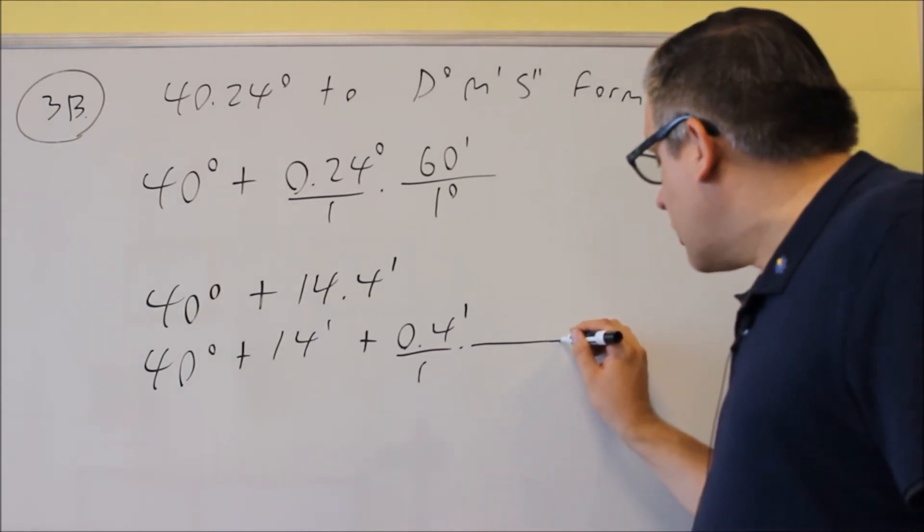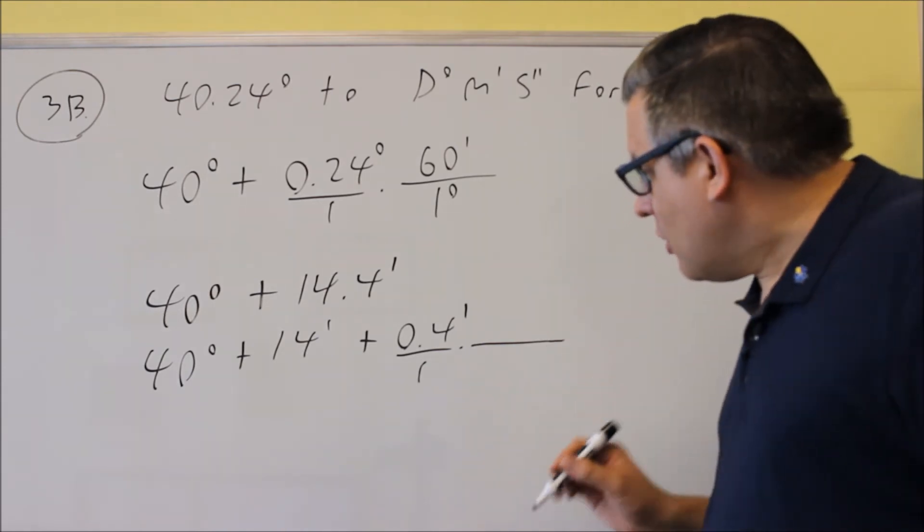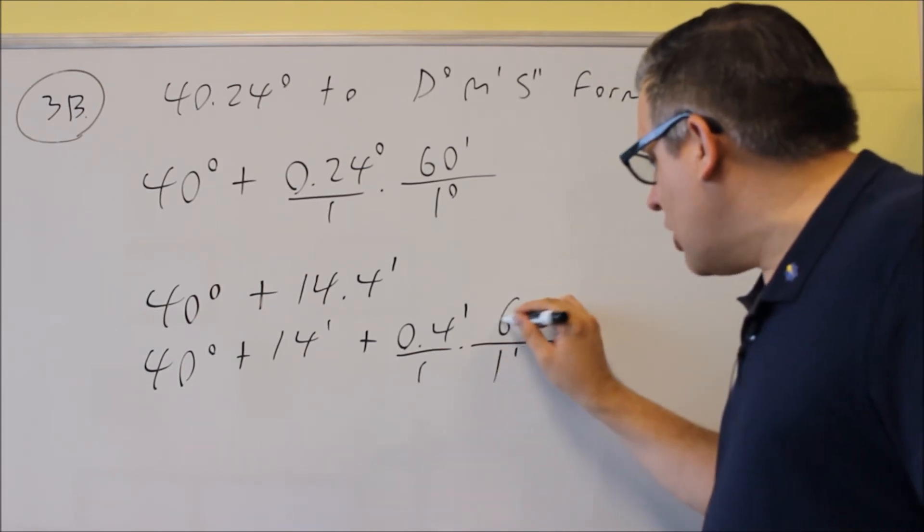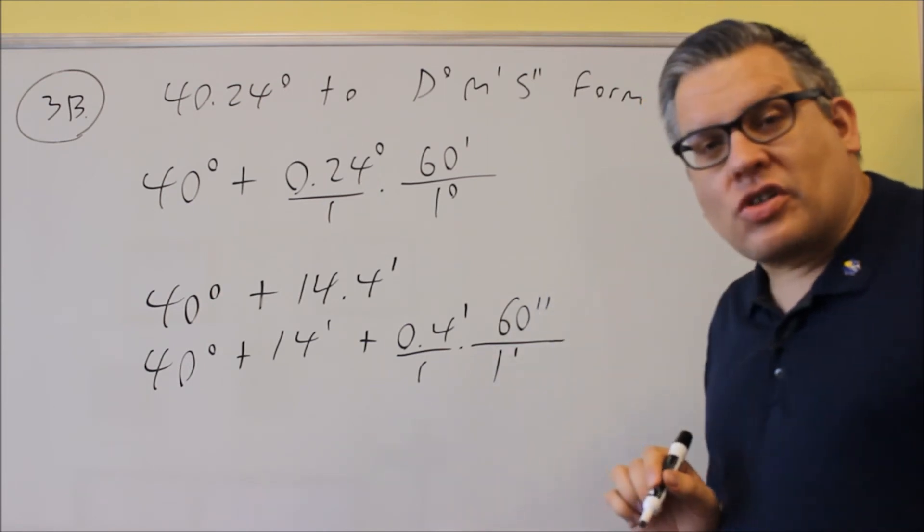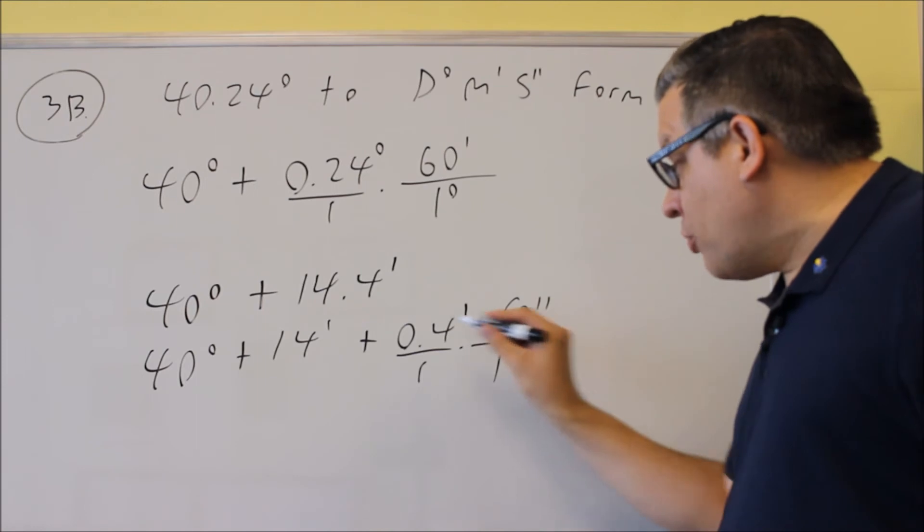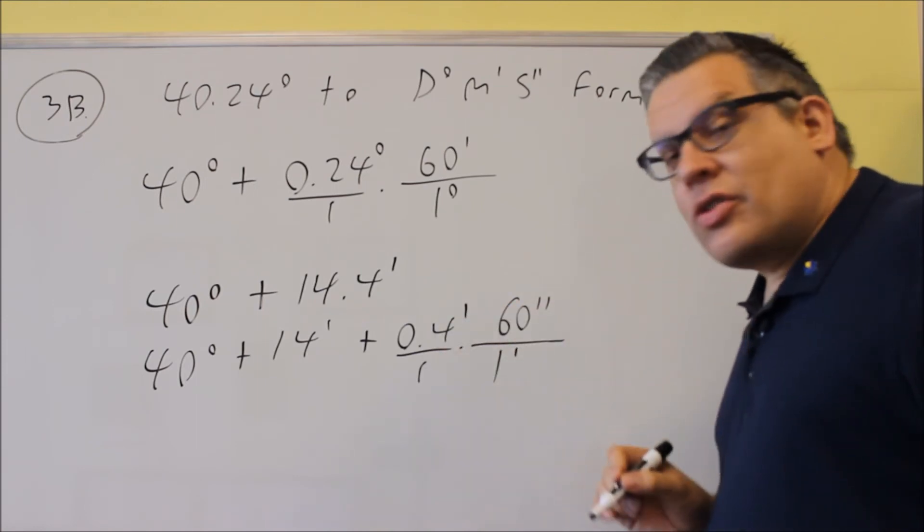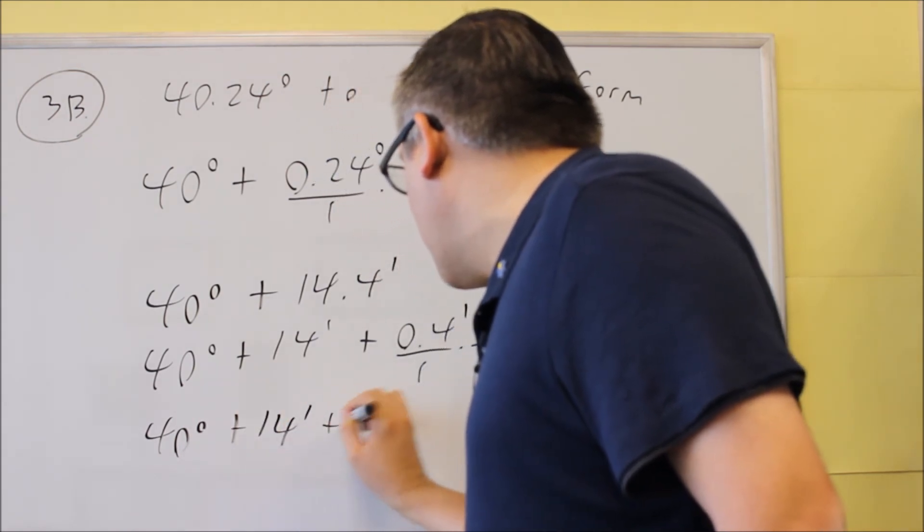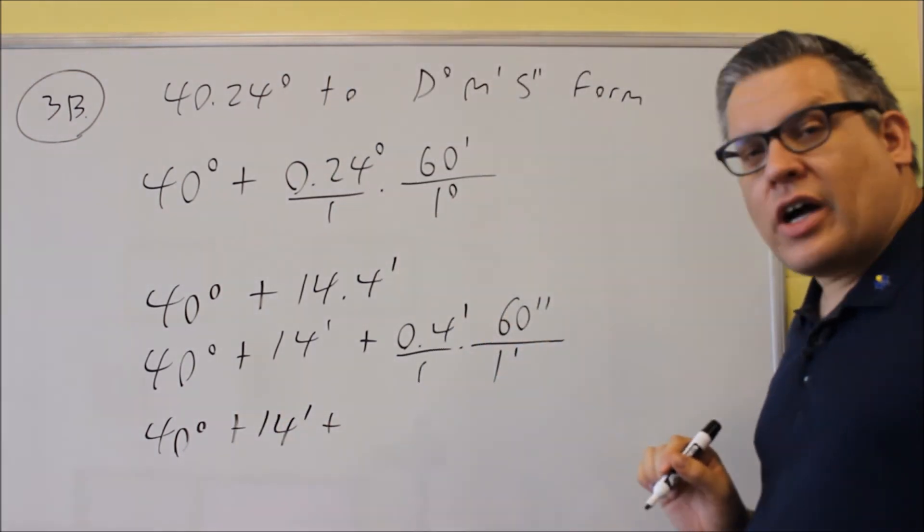So the way that it works is we have 1 minute is equal to 60 seconds, so we have 1 minute is the same thing as 60 seconds. The double hash marks means you have seconds here. So we're going to do 0.4 times the 60. So we're going to get 40 degrees plus 14 minutes plus, and the minutes are going to cancel out there.